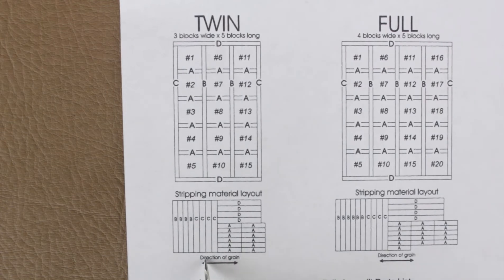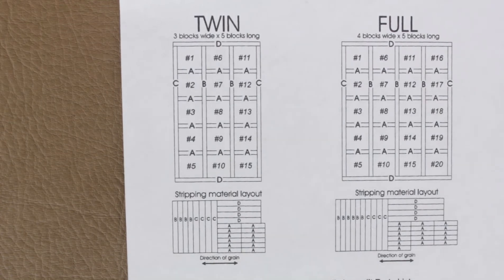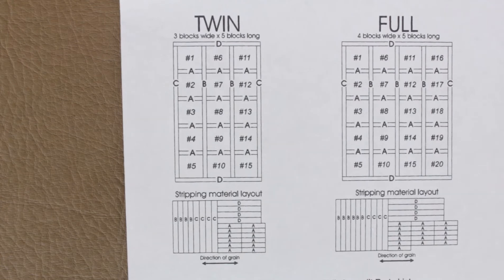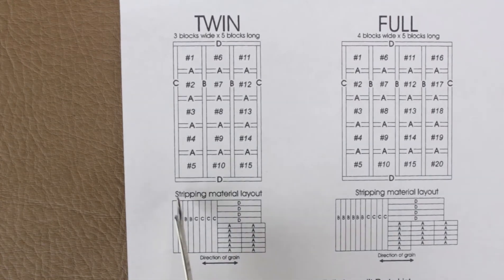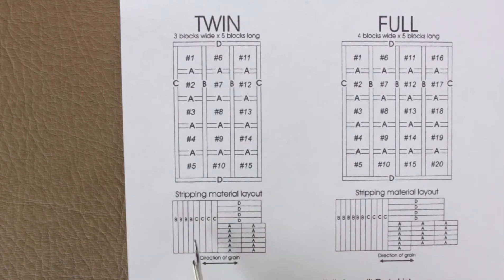Down here at the bottom, we have direction of grain. This tells you how you need to lay it out on your fabric. Now, grainline is always parallel to the selvage. So if we pretend that this is my fabric, if the selvage is running along the top, then you can go ahead and do this exact same layout, which I'll show you shortly.